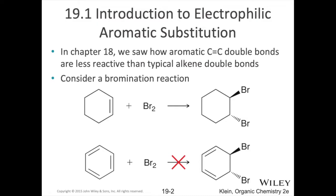The reason for this, as we saw in the last chapter, is the unusual stability of these aromatic systems. They really want to stay as those aromatic rings, and doing that addition reaction across one of those double bonds would take that ring out of that stability. That's why it's just not energetically favorable.